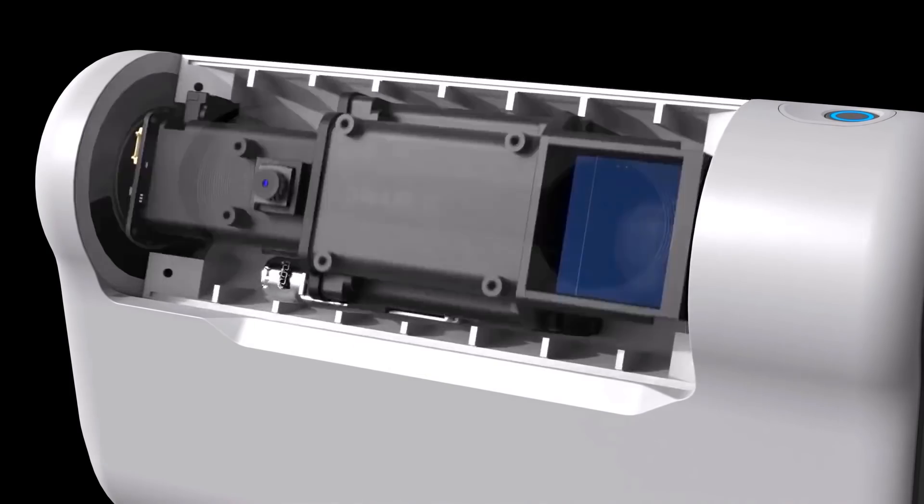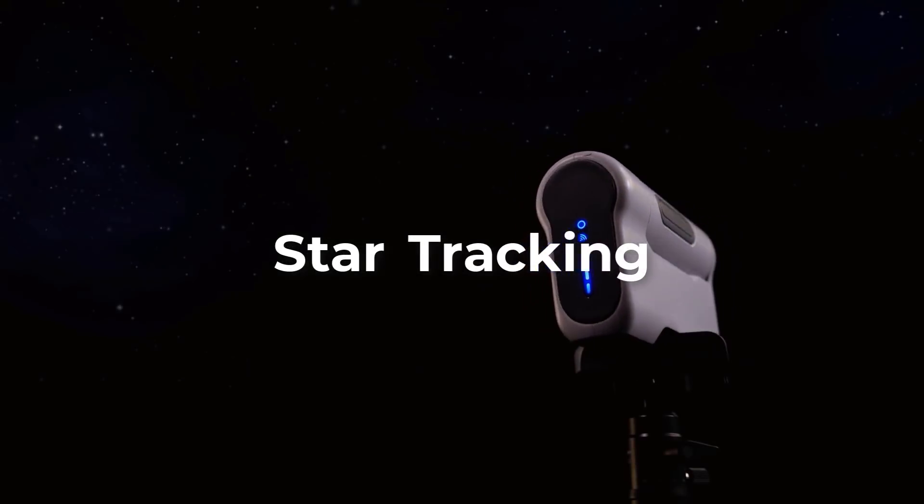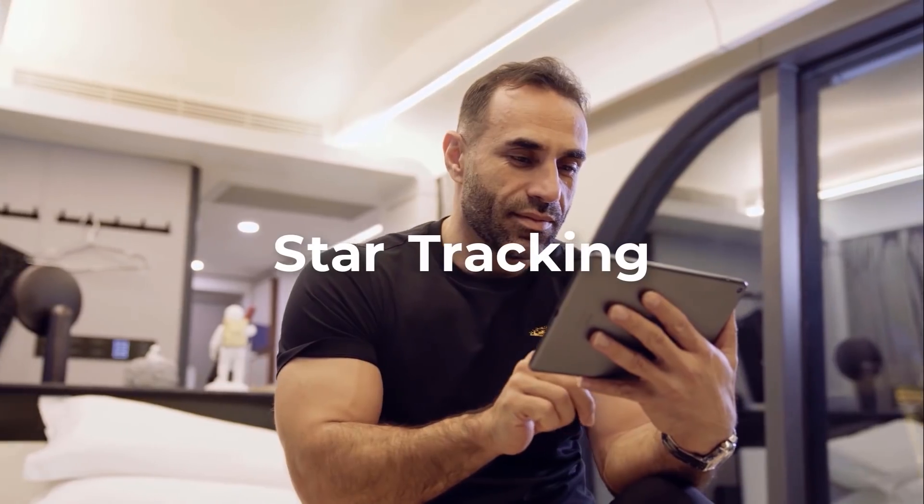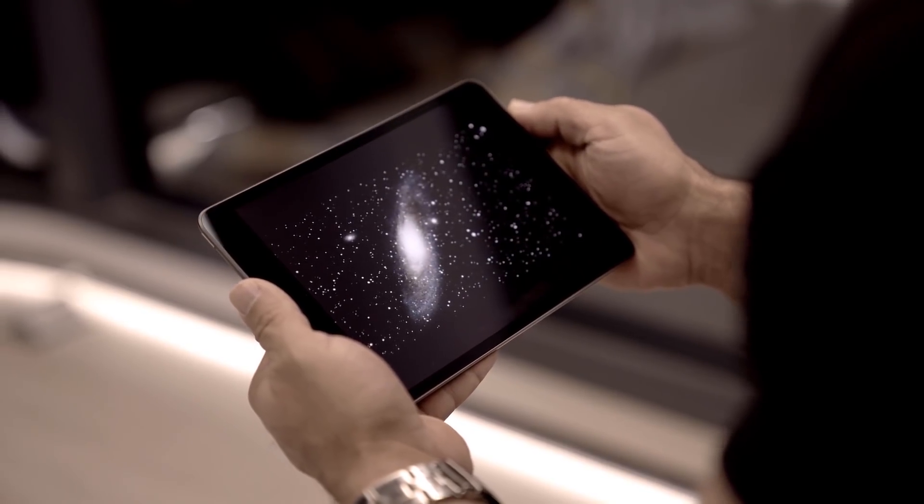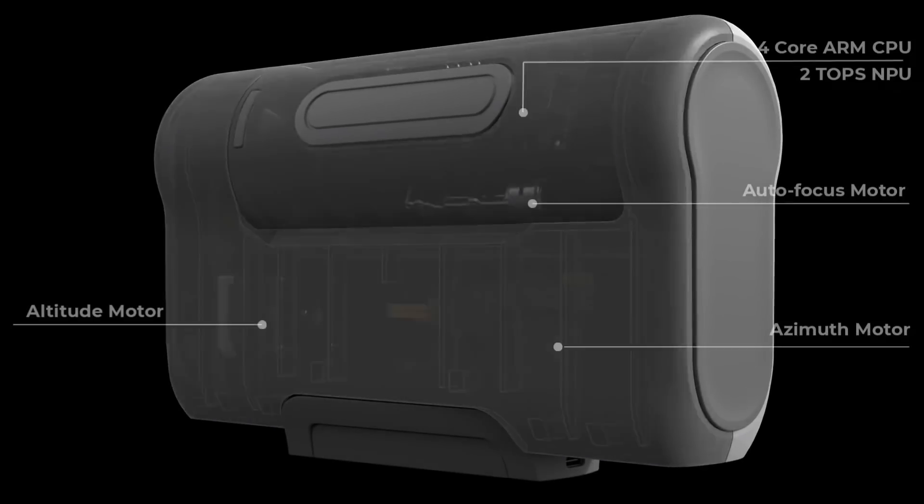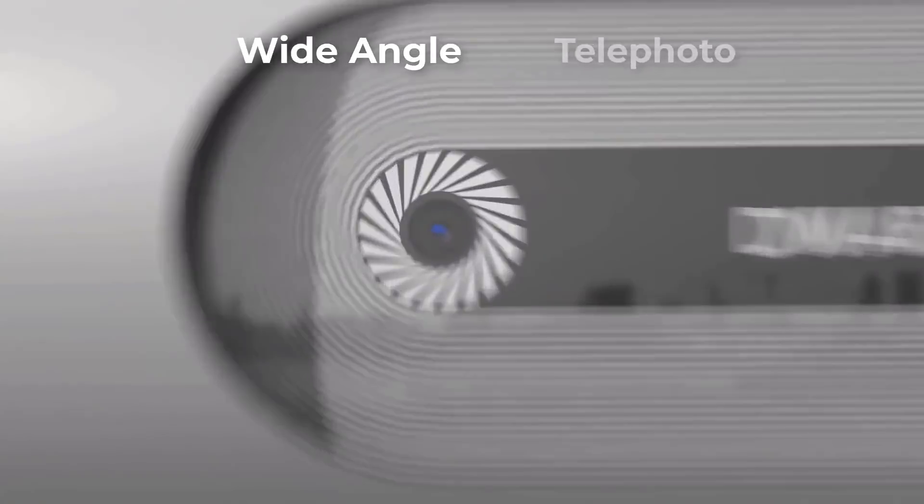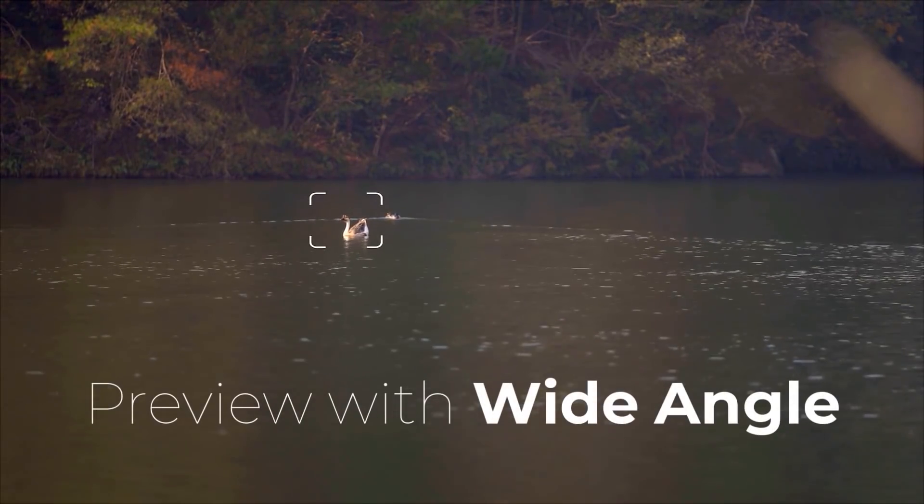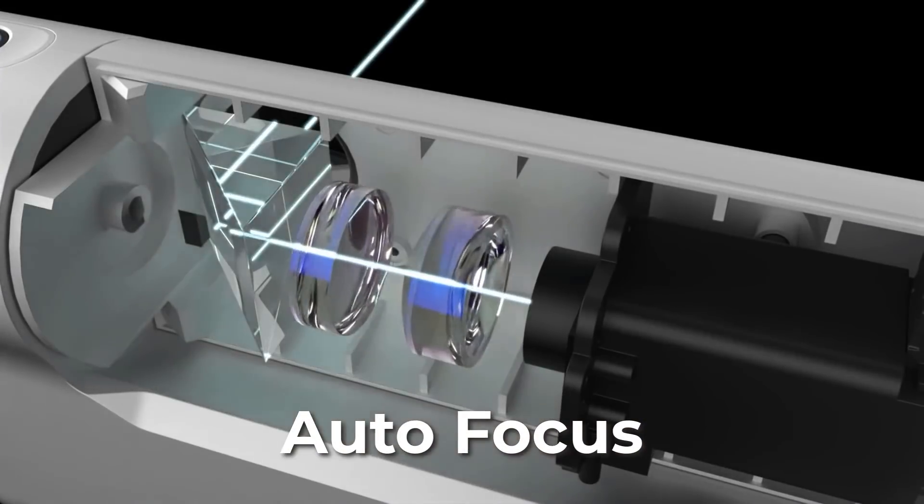Unlike traditional telescopes that are bulky and costly, Dwarf 2 allows you to explore your interests without hassle. For astronomy lovers, automatically track and capture deep-sky objects with just one click. Forget about searching the skies for your target galaxy or nebulae. Our telescope does everything for you. Dwarf 2's intelligent hardware platform comes with edge computing capabilities and powerful dual-angle cameras.